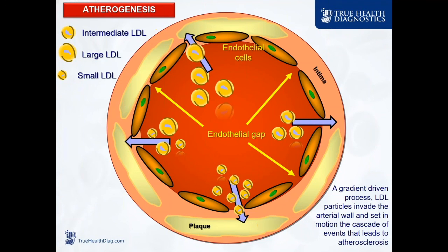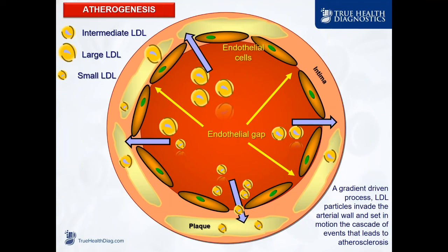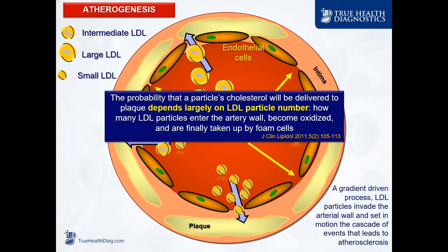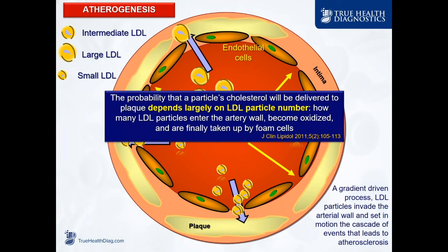You see an arterial wall with some plaque there. You see lipoproteins — ApoB-containing lipoproteins — leaving the plasma, passing through the endothelium, often through gaps created in dysfunctional endothelium. They are oxidized and internalized by monocytes turned macrophages, and you create foam cells. The probability that a particle's cholesterol will be delivered to the plaque depends on what particles there are. It is not as dependent as we used to believe on the size of the LDL or how many cholesterol molecules that LDL particle is carrying. It's particle number that drives these ApoB-containing particles into your artery wall.